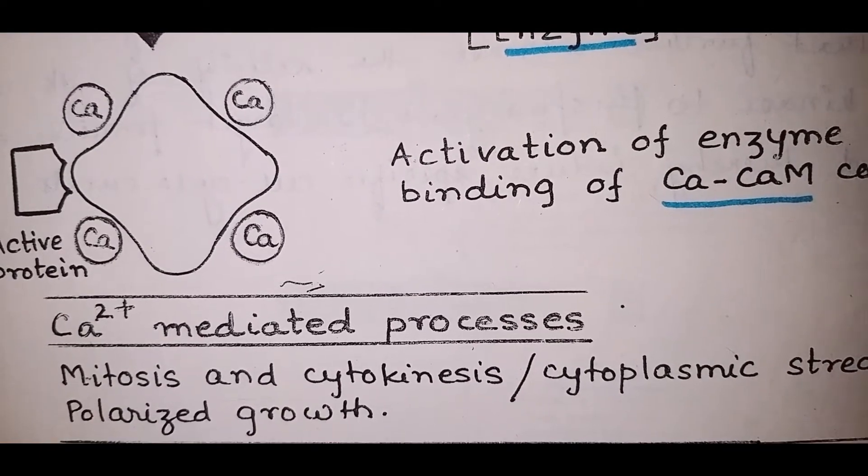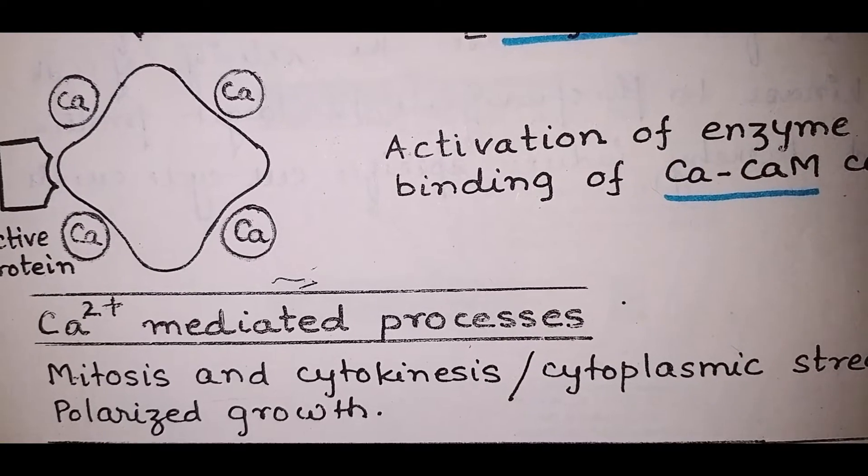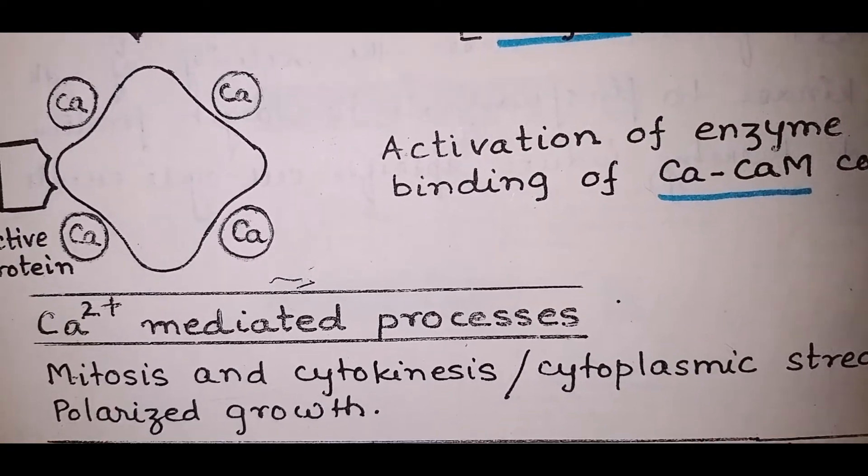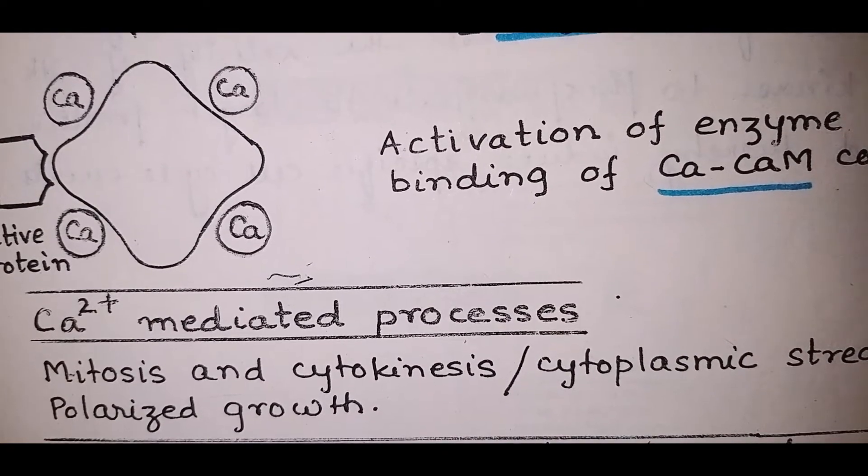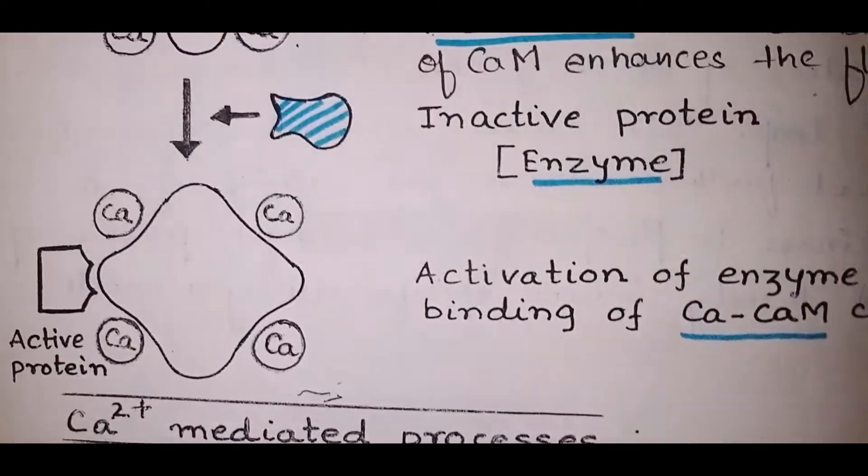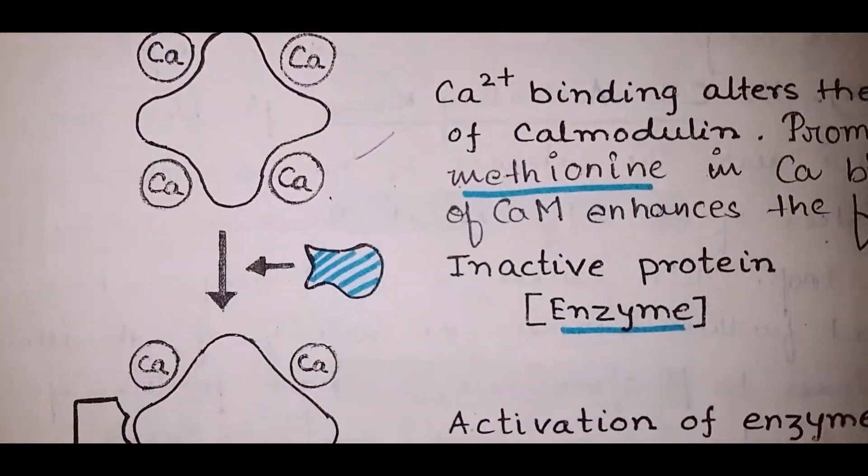On binding calcium, calmodulin undergoes a substantial change in the tertiary structure. You have seen here - initially how did it look, and after calcium binding how is it looking? It exposes a hydrophobic patch rich in methionine, leucine, and phenylalanine.